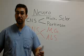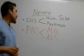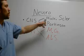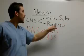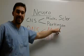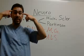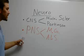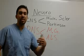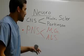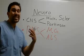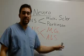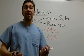In your central nervous system, you can develop multiple sclerosis and Parkinson's disease, which affect your brain and spinal cord. In your peripheral nervous system, patients can develop MG — myasthenia gravis — and ALS, which is also known as Lou Gehrig's disease.